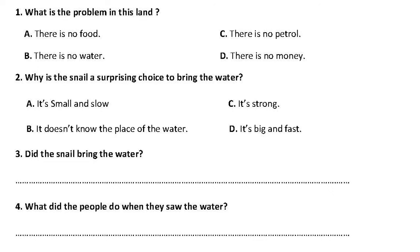Now let's move to the questions. Number one: What is the problem in this land? The answer is there is no water — the problem is there is no water. Number two: Why is the snail a surprising choice to bring the water? Because it's small and slow.